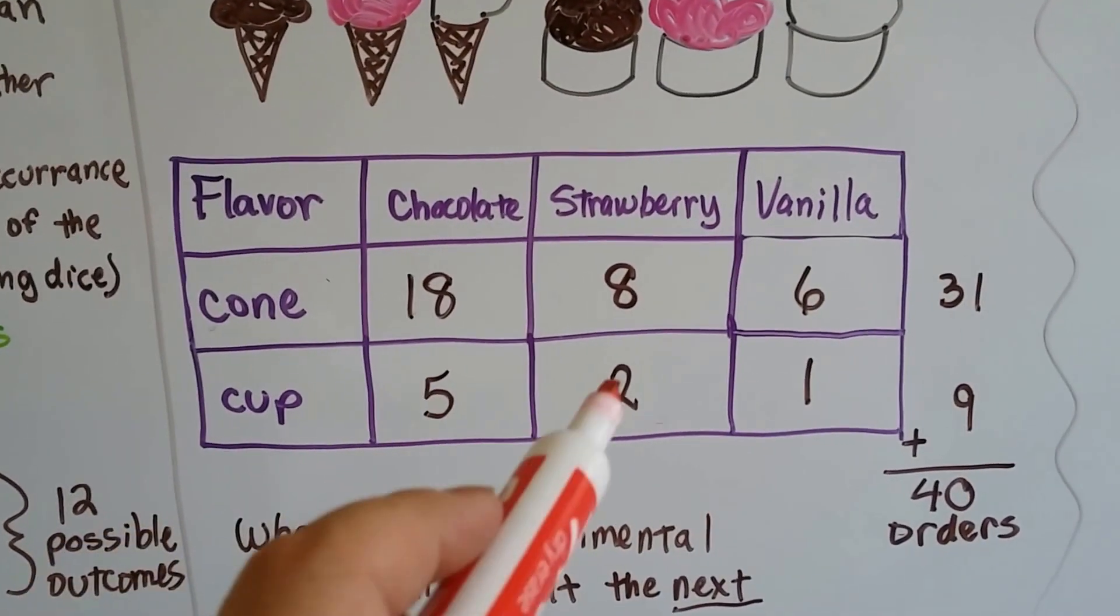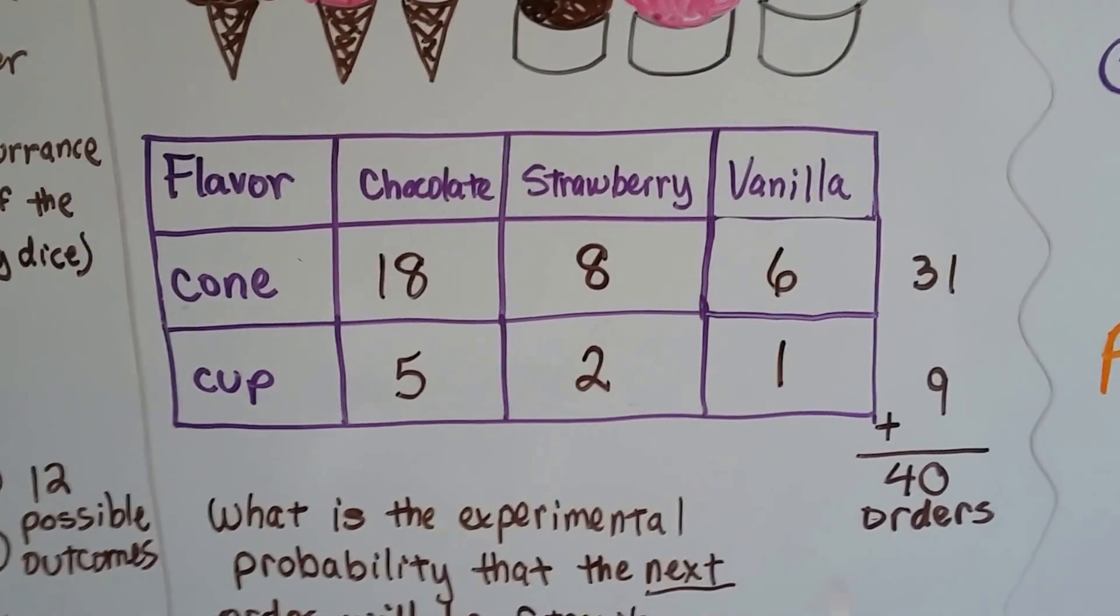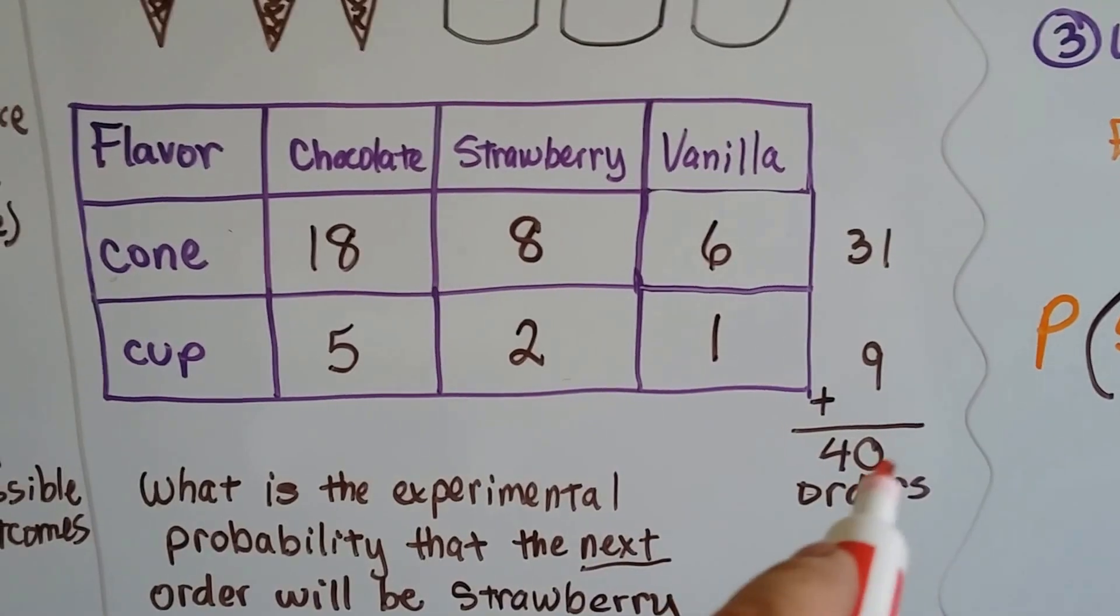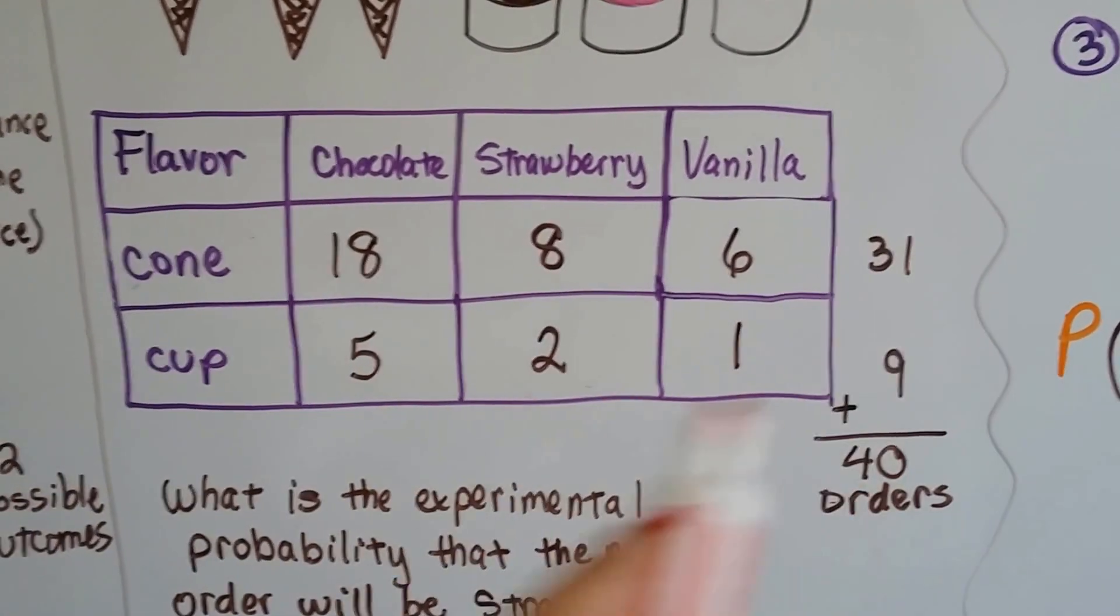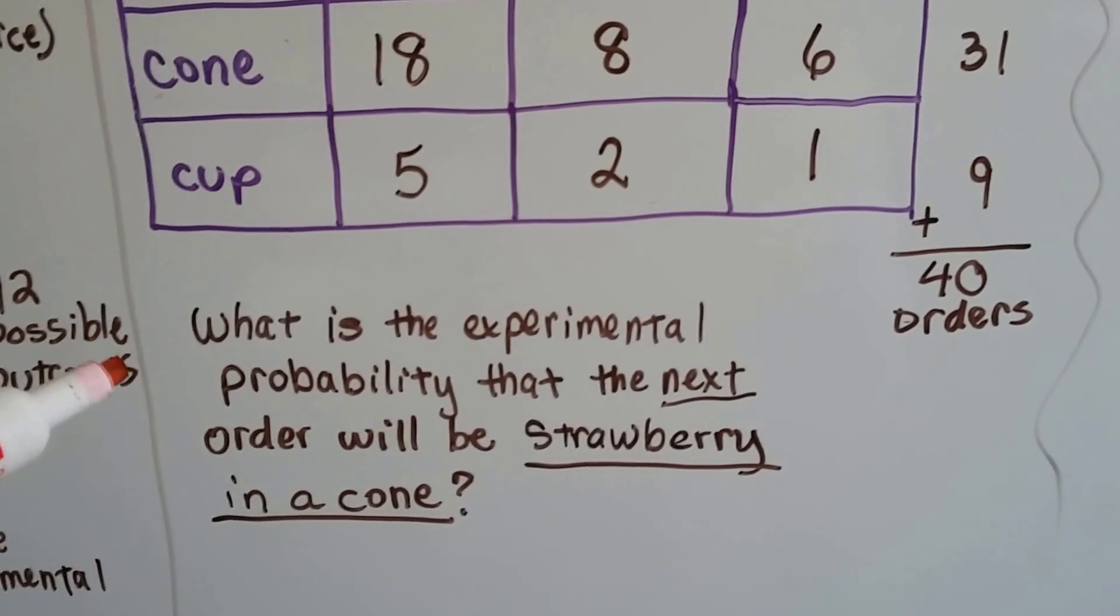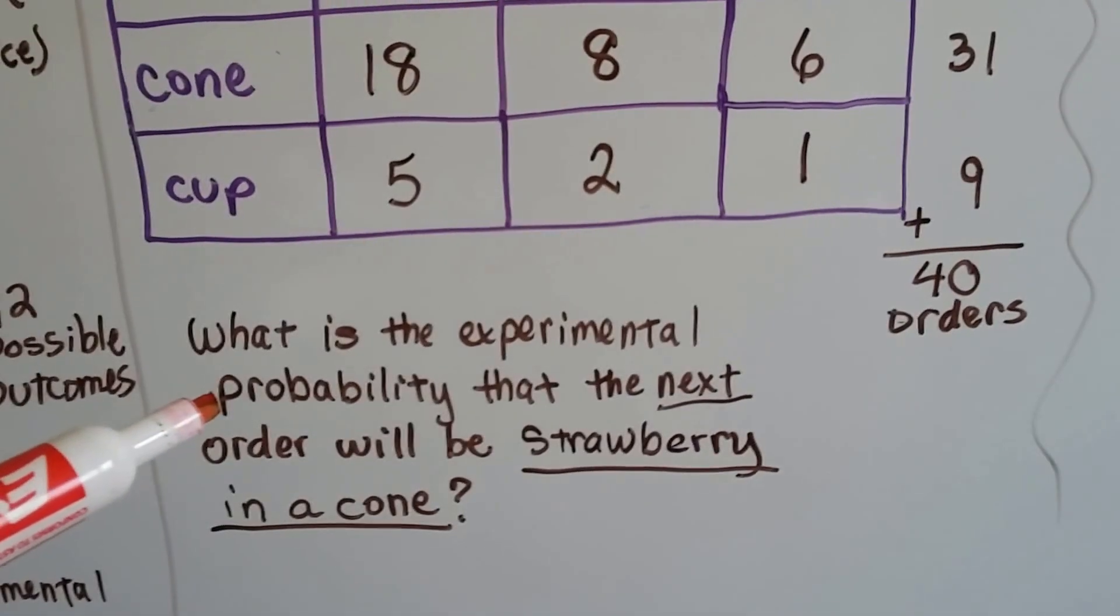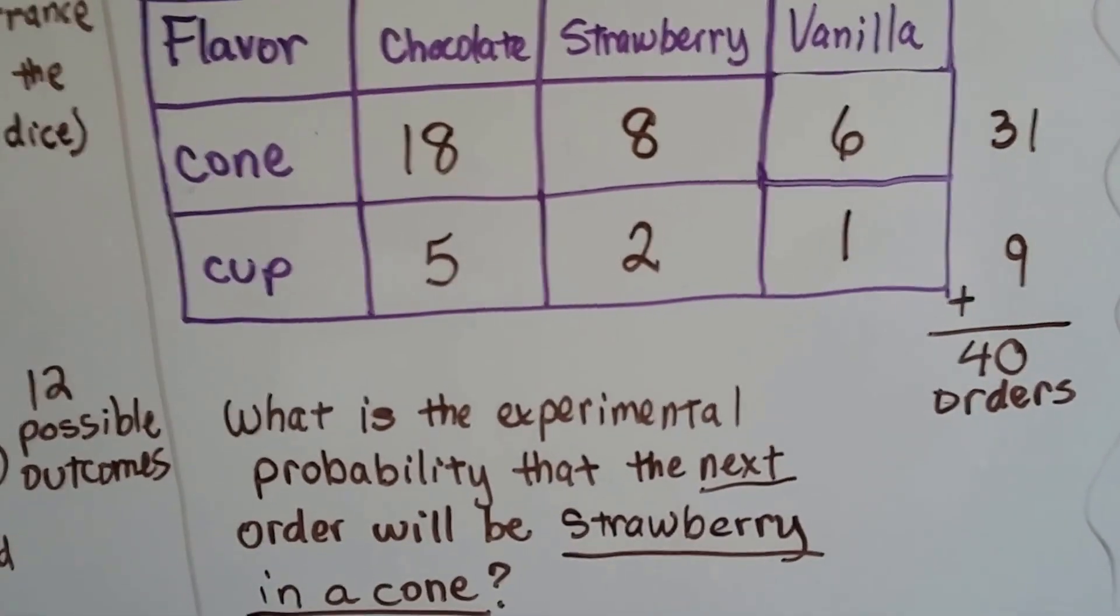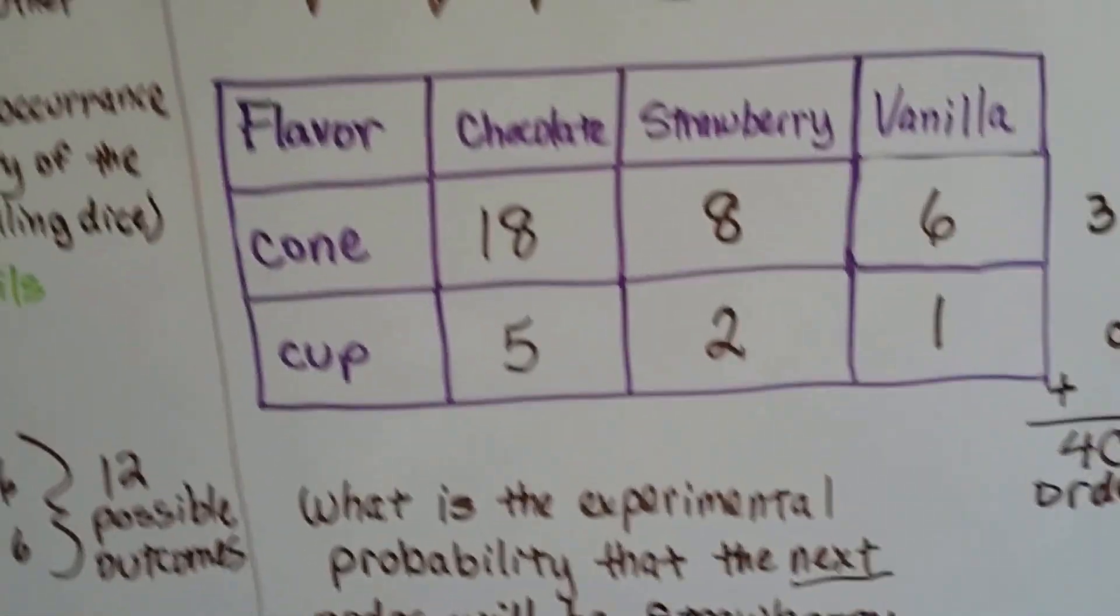5 ordered the chocolate in a cup, 2 ordered the strawberry in a cup, and 1 ordered vanilla in a cup, then we would know that there's 40 orders, because there's 31 here and 9 here, and we could figure out, what is the experimental probability that the next order will be strawberry in a cone?